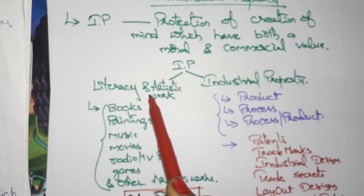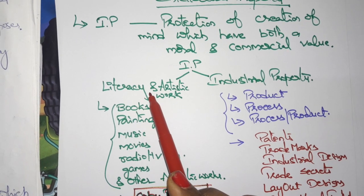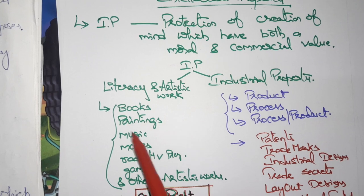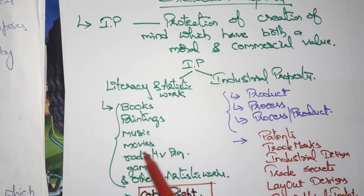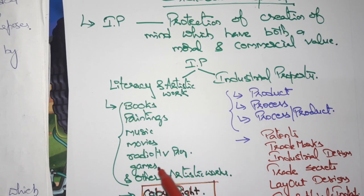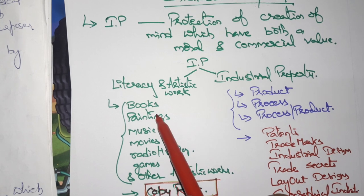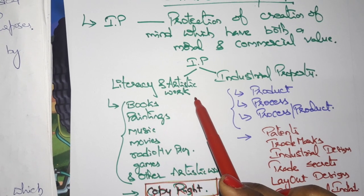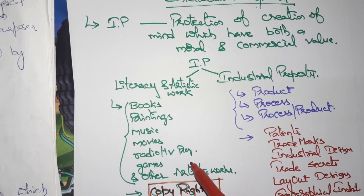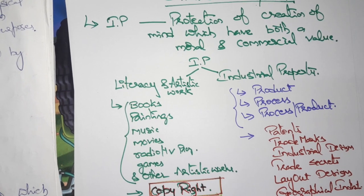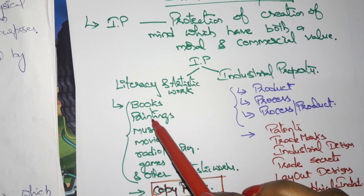The first one is literary and artistic work, and the second one is industrial property. Literary and artistic work covers books, paintings, music, movies, radio or TV programs, games, and other artistic works. All these come under literary and artistic work.